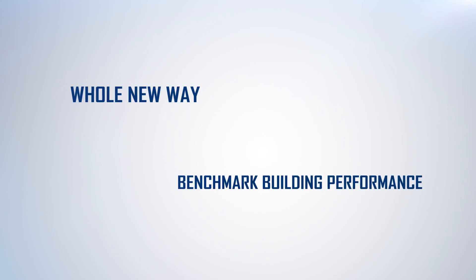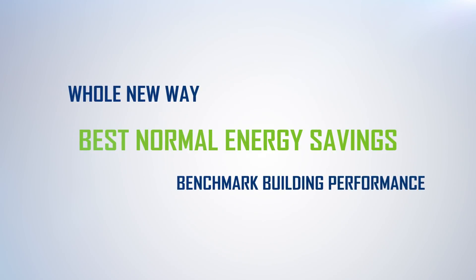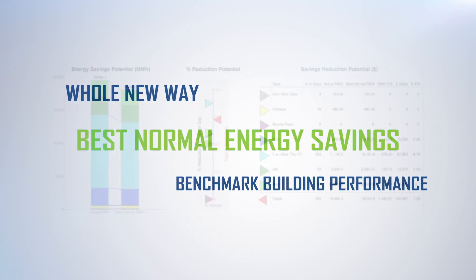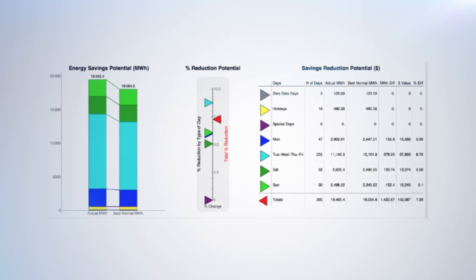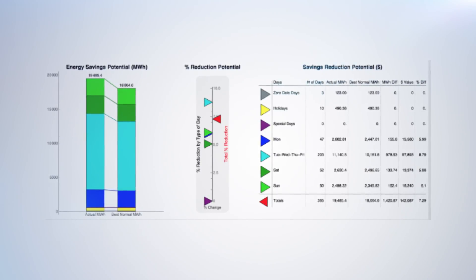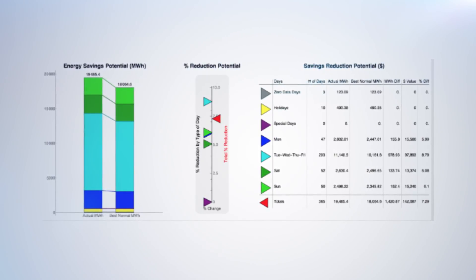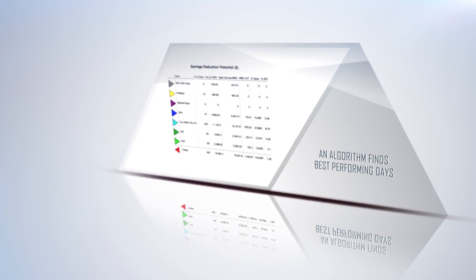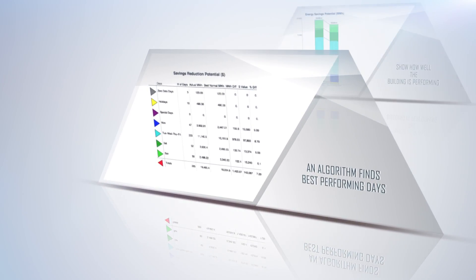A whole new way to benchmark building performance is something we call best normal energy savings. We analyze a building's energy performance against itself to reveal the cost of control system settings or procedures. An algorithm then finds the best performance days for any given day of the week and weather.